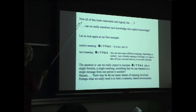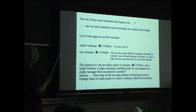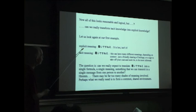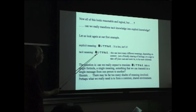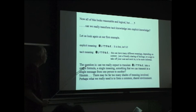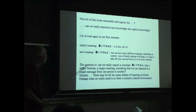Let us go back. So, what I just said looks reasonable and logical. But can we really transform tacit knowledge into explicit knowledge? I have made it very easy. I draw an arrow from tacit knowledge, from implicit knowledge to explicit knowledge. But can we really do that? Let us again look at our first example. The explicit meaning, Atsui desu ne, it is hot, isn't it? The tacit meaning, Atsui desu ne, friendly sharing of feelings or the sign to take off your coat. The question is, can we really expect to translate Atsui desu ne into a single formula, a single meaning, something that we can transmit in a single message from one person to another?